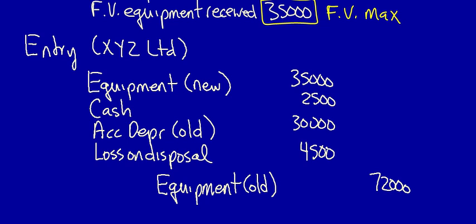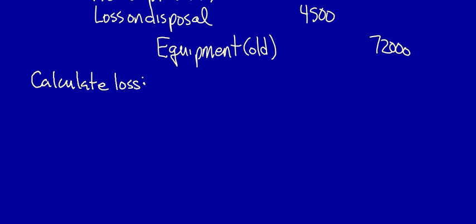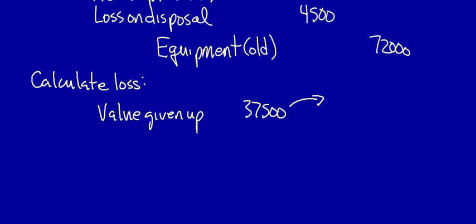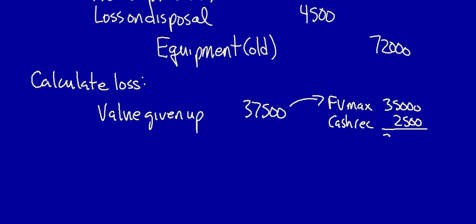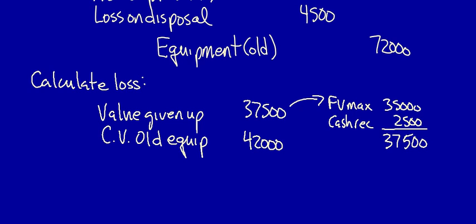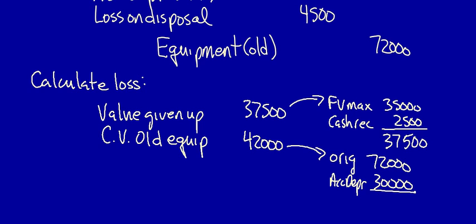Can I calculate this loss mathematically? Yes. We look at the value given up: $37,500. This is calculated as the fair value maximum of $35,000 plus the cash received of $2,500. Now compare it to the carrying value of the old equipment: $42,000, calculated as original cost $72,000 less accumulated depreciation $30,000. The difference between $37,500 and $42,000 is $4,500, which is the loss on disposal.